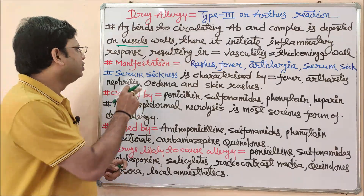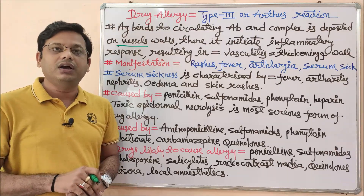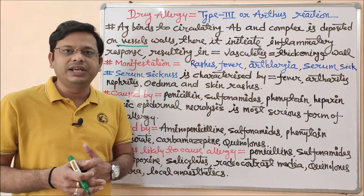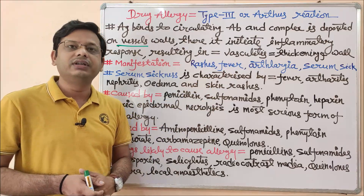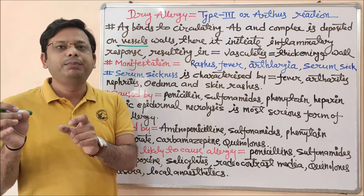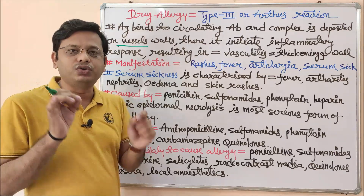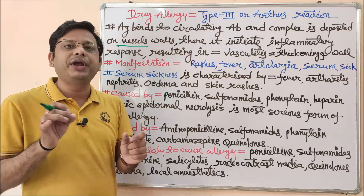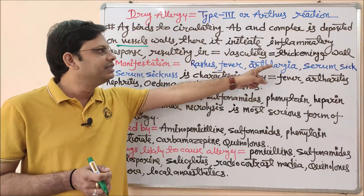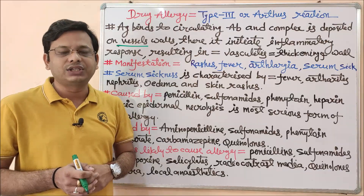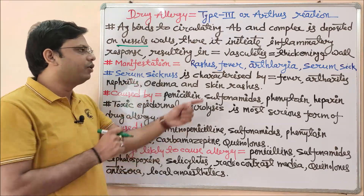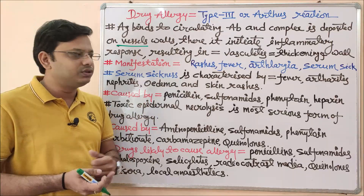What are the basic manifestations observed in this Type 3 drug allergic response? These are rashes on and above the skin, fever — that is elevation of body temperature — and arthralgia, which represents joint pain. 'Arthro' means joints and 'algia' stands for pain. Serum sickness may also occur as a result of the antigen-antibody interaction.